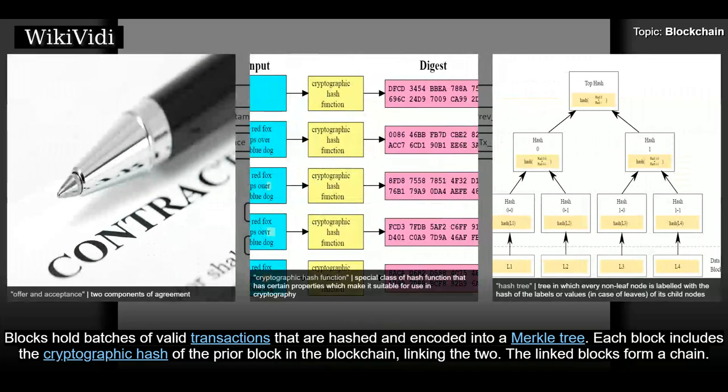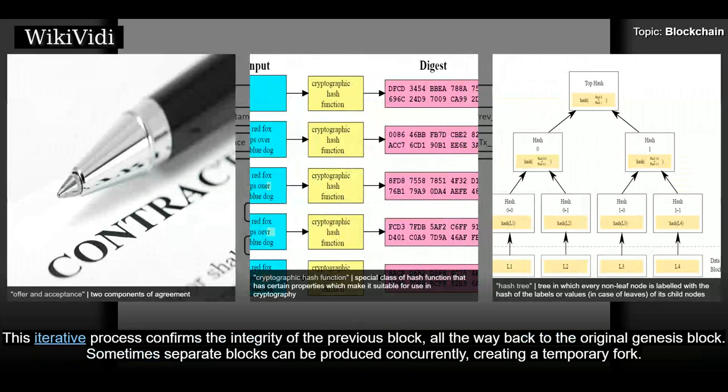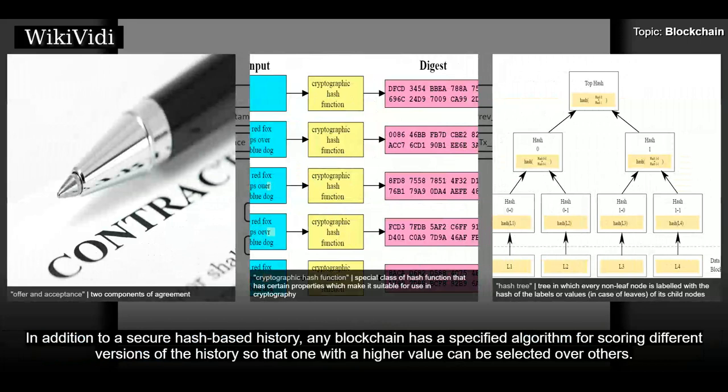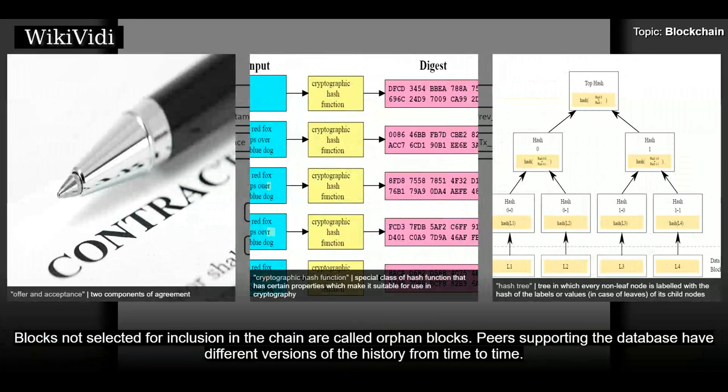Blocks hold batches of valid transactions that are hashed and encoded into a Merkle tree. Each block includes the cryptographic hash of the prior block in the blockchain, linking the two. The linked blocks form a chain. This iterative process confirms the integrity of the previous block, all the way back to the original Genesis block. Sometimes separate blocks can be produced concurrently, creating a temporary fork. Any blockchain has a specified algorithm for scoring different versions of the history so that one with a higher value can be selected over others. Blocks not selected for inclusion in the chain are called orphan blocks.